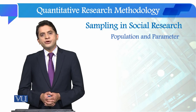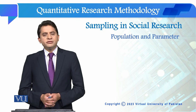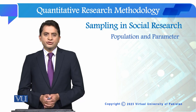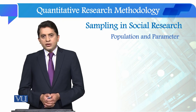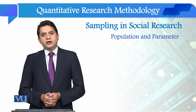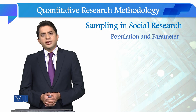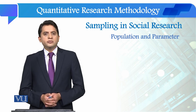Dear students, now we are going to start the new chapter of our course which is Sampling in Social Research. Whether we talk about quantitative research methodology or qualitative research methodology, sampling is an important part of the research process. In this chapter, we will study different concepts related to sampling, discuss techniques of sampling, and develop our understanding of the types of each technique. The first concept is population and parameter.